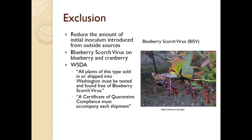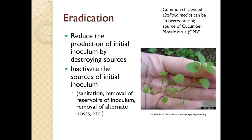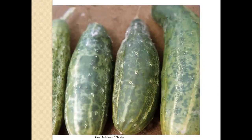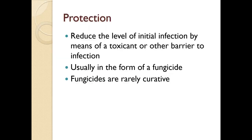Washington also has to do this when sending some of their plants out. Eradication is reducing the production of initial inoculum by destroying sources, inactivating them through sanitation, removal of reservoirs, and removal of alternate hosts. Common chickweed, which is a winter annual, can actually be an overwintering source of cucumber mosaic virus. Protection is reducing the level of initial infection by means of a toxicant or other barrier to infection — this is usually a fungicide. These are rarely curative; they really function as protectants.